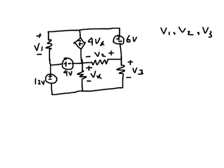We need to find the voltages V1, V2, and V3. This is a voltage-controlled voltage source, where the controlling voltage is Vx, and there is also an independent voltage source. Let's start by assuming this node to be the ground, so this is zero volts.